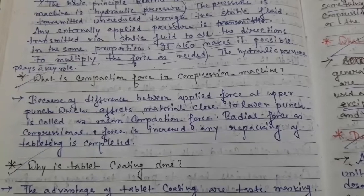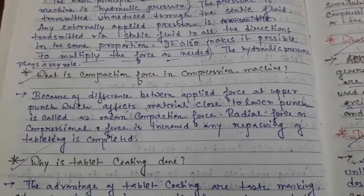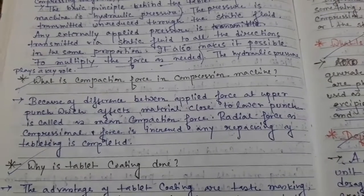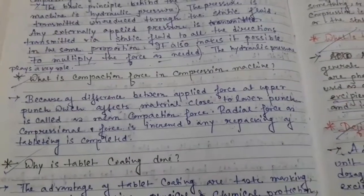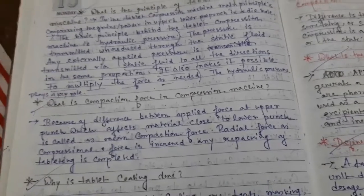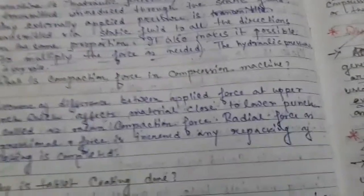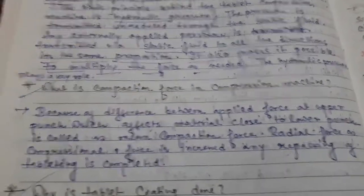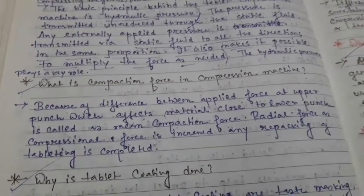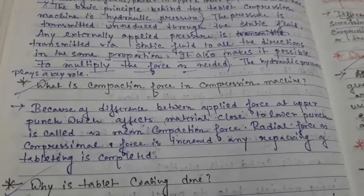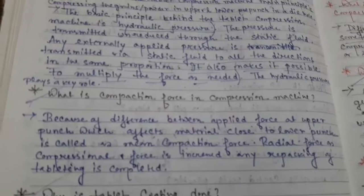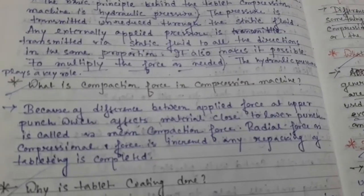What is the compaction force in a compression machine? Because of the difference between applied force at the upper punch, which affects material flow to the lower punch, this is called compaction. The compaction force is included in the compression machine. In the compression machine, the upper punch and lower punch are both attached. When you apply force on the upper punch, the materials are pressed toward the lower punch, and due to this force, the tablet is made in different shapes and sizes.